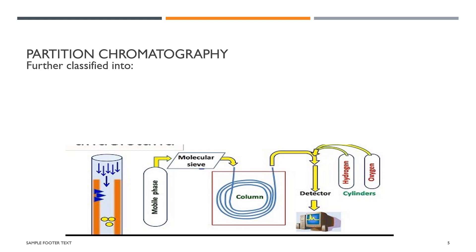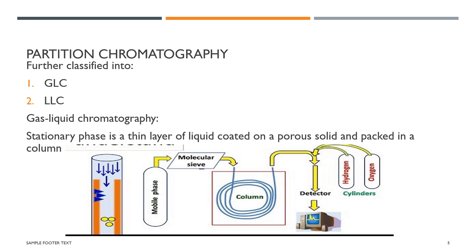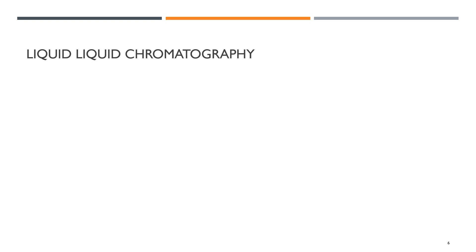Partition chromatography is further classified into gas-liquid chromatography and liquid-liquid chromatography. In gas-liquid chromatography, the stationary phase is a thin layer of liquid coated on a porous solid and packed in a column. As seen in the diagram, partition takes place in the column, and the separation is detected by different detectors.